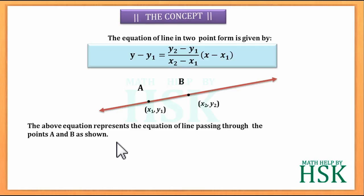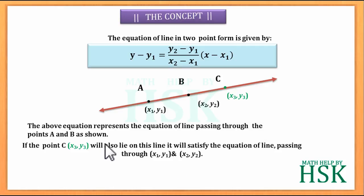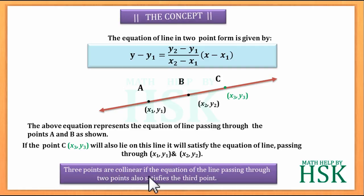Now if we consider that the point C (X3, Y3) also lies on the same line, then the point C will satisfy the above equation of the line passing through the points A (X1, Y1), B (X2, Y2). So three points are collinear if the equation of the line passing through two points also satisfies the third point.